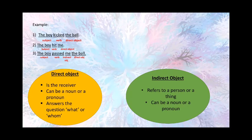With this, we conclude the explanation for direct object and indirect object. Thank you.